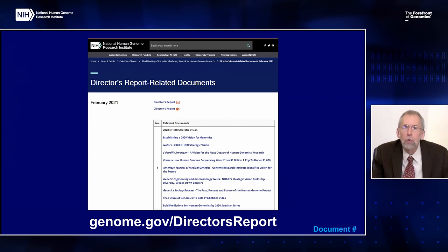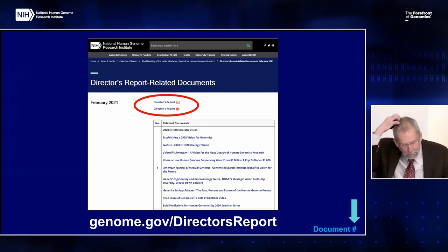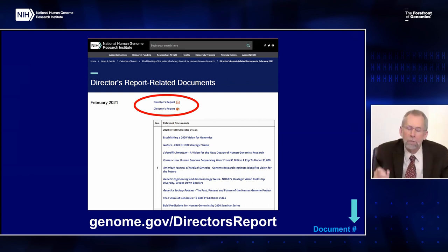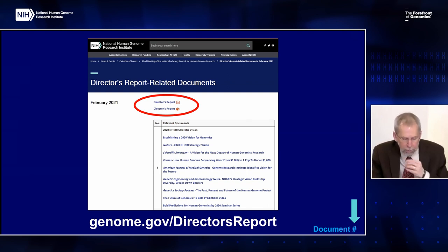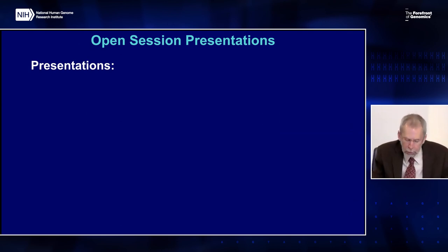The slides that I'll show during my director's report are available in PDF or PowerPoint formats. If you look at the bottom right-hand corner of many of the slides, you might find a document number, which means there are documents or relevant websites associated with that particular slide. That dedicated webpage and all the linked documents are going to be archived on genome.gov. My director's report is going to be tailored around the other presentations, so I'm not going to discuss in detail topics that others will be bringing up later.